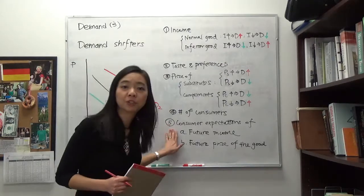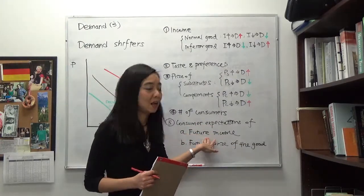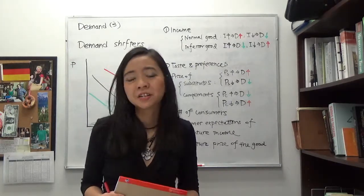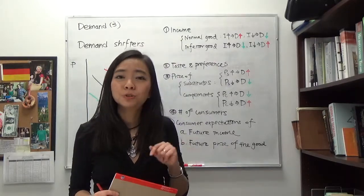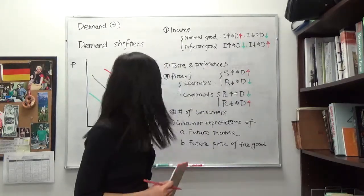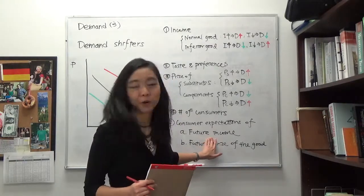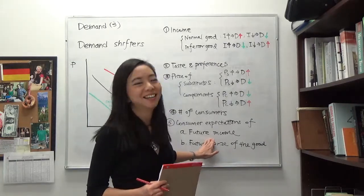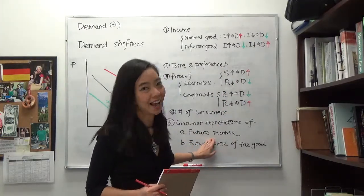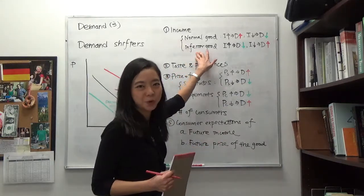The last demand shifter is consumer expectations, which includes expectations of your future income and future price. Suppose you're a senior who hasn't started working yet, but you receive a job offer paying $70,000 per year because you have an economics degree. You expect your future income to go up, so you'll start to wine and dine more often. Your demand for normal goods is going to go up if you expect your future income to go up. At the same time, your demand for inferior goods is going to go down.